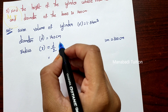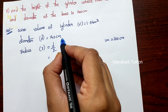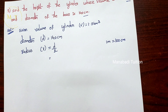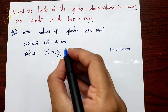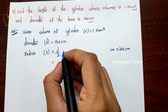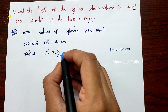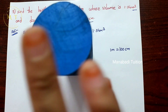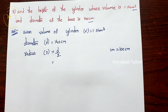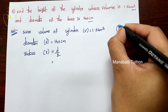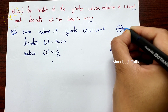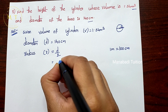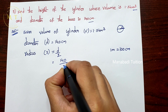Diameter D = 140 centimeters. We convert to meters since units must match. Radius = diameter ÷ 2. The cylinder's base is a circular shape, and radius is half the diameter.